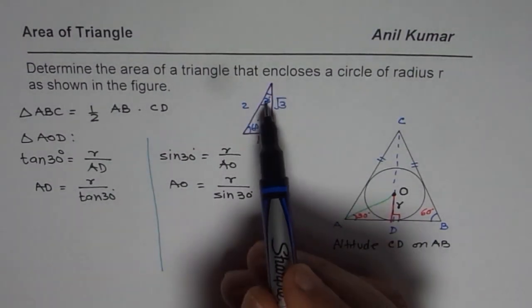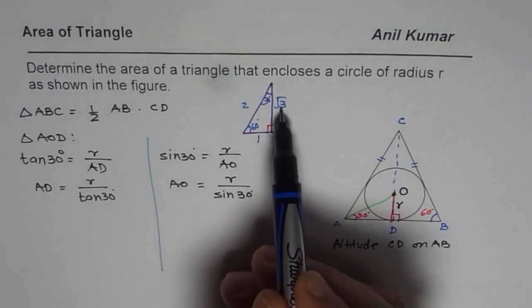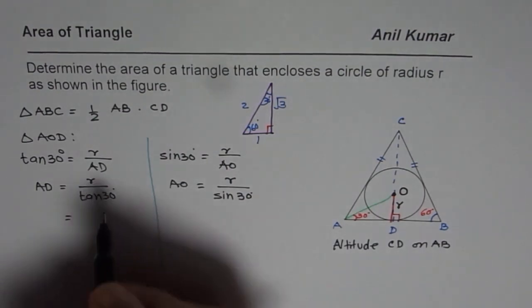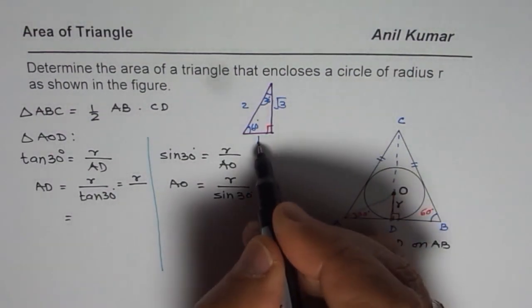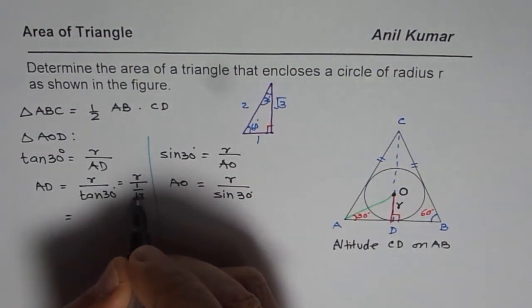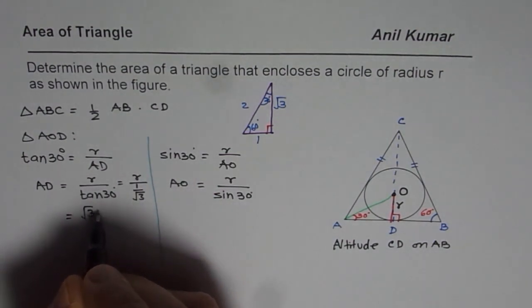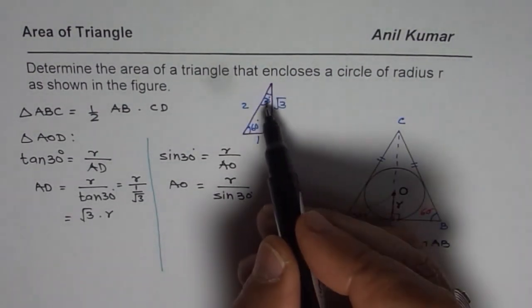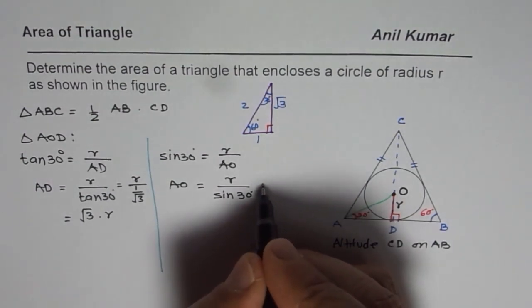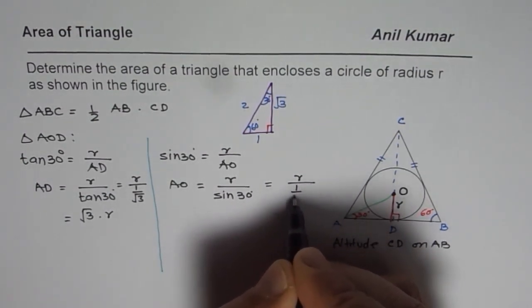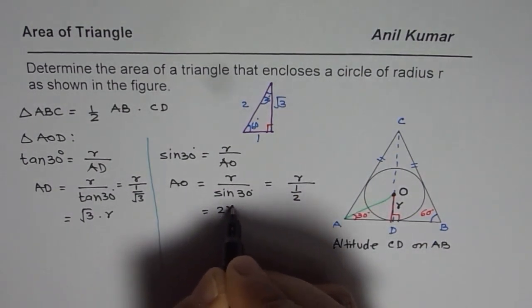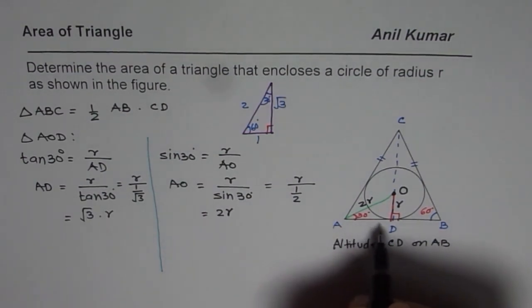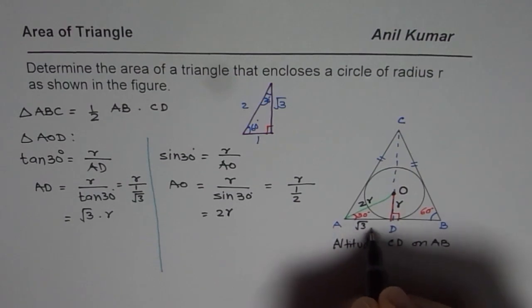In that case tan of 30 degrees is 1 over square root 3. So from here we can get AD which is equals to R divided by tan of 30, which is 1 over square root 3, or square root 3 times R. As far as AO is concerned which is R divided by sine 30, now sine 30 is opposite over hypotenuse, so I could write this as R divided by 1 over 2 or equals to 2 times R. So AO is equals to 2 times R.